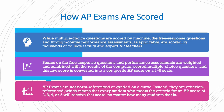How are AP exams scored? The multiple choice questions are scored by machine, while the free response questions are scored by thousands of college faculty and expert AP teachers. Scores on the free response questions and performance assessments are weighted and combined with the results of the computer-scored MCQs, and this raw score is converted into a composite AP score on a 1 to 5 scale. AP exams are not norm-referenced or graded on a curve — instead they are criterion-referenced, which means that every student who meets the criteria for an AP score of 2, 3, 4, or 5 will receive that score no matter how many students that is.